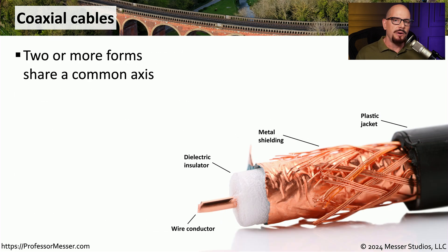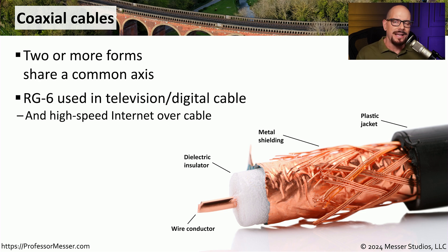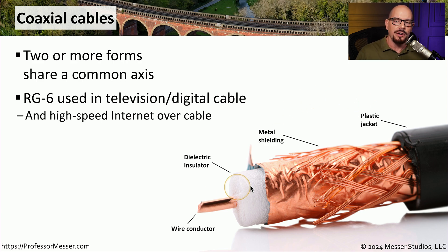Although twisted pair wiring is very common for local area networks, another type of ethernet cable that's very often used is a coaxial cable. This describes a cable where two or more forms within that cable share a common axis. You can see the single wire conductor in the middle of the coaxial cable, along with an insulator, a shielding, and a jacket that all share that same axis. One common type of coaxial cable, especially for ethernet and internet connections, is an RG6 cable. If you have a cable modem or are bringing a cable modem connection into your data center, it's probably being brought in on a coaxial cable.